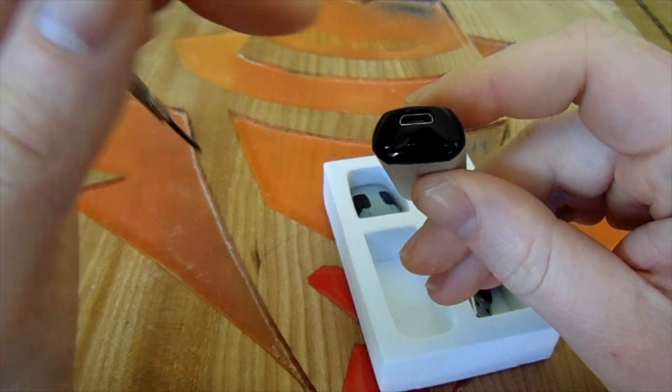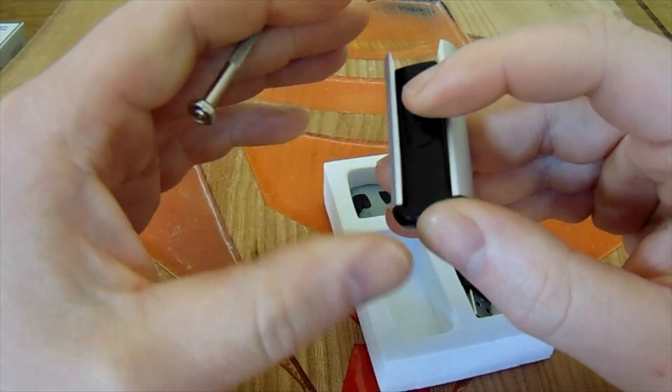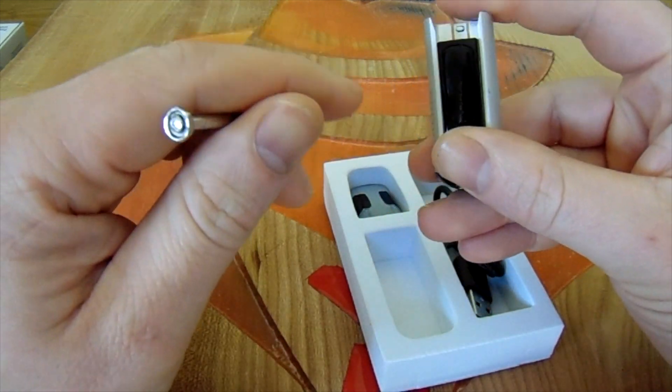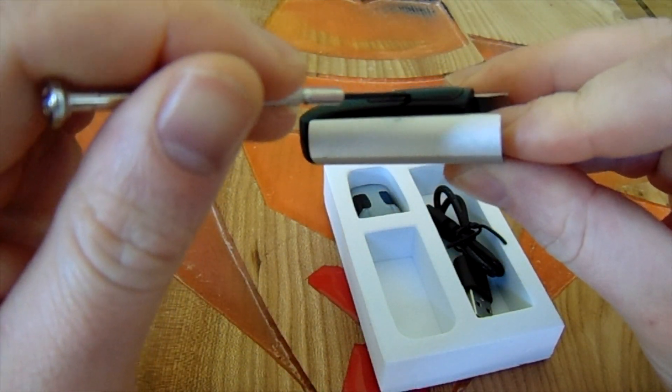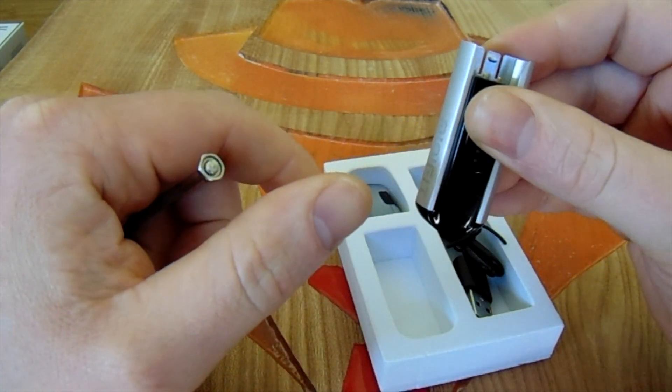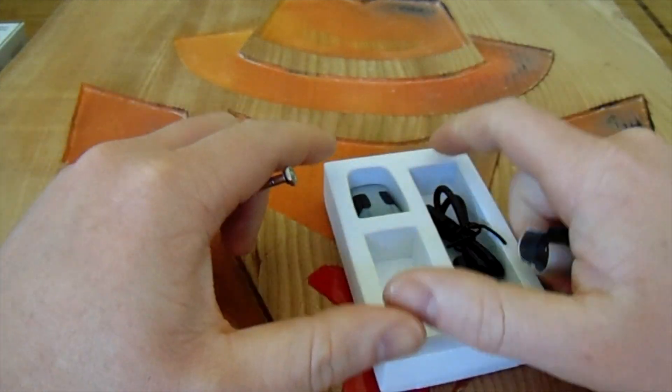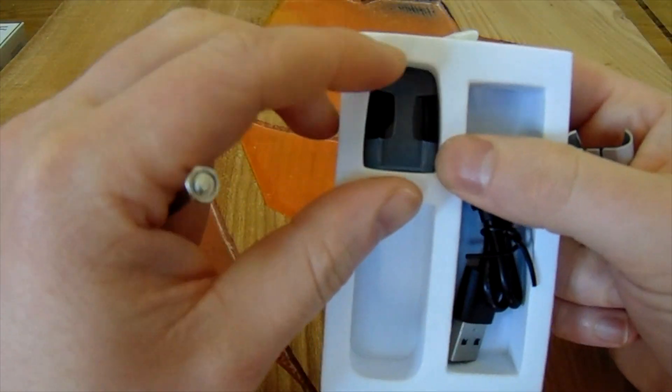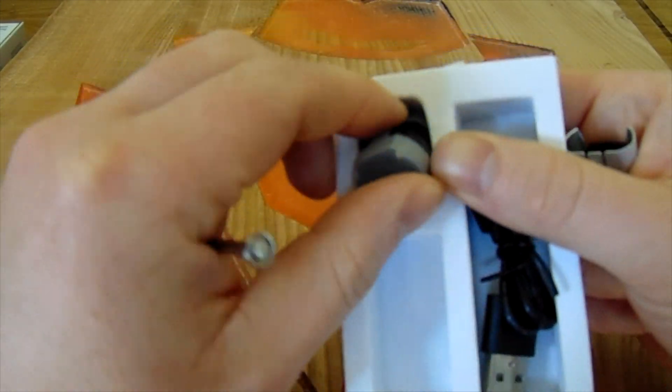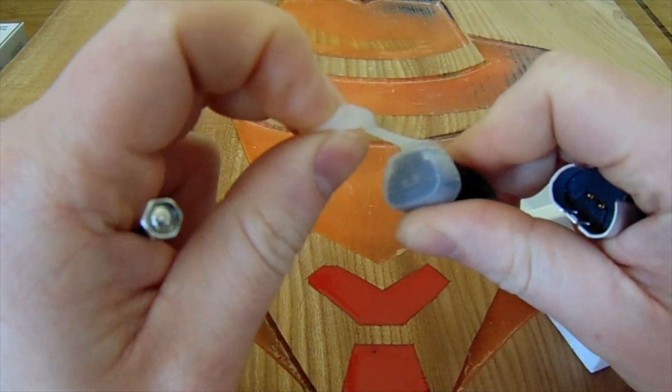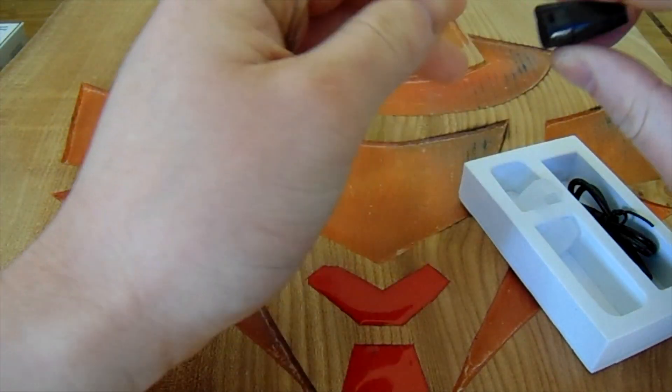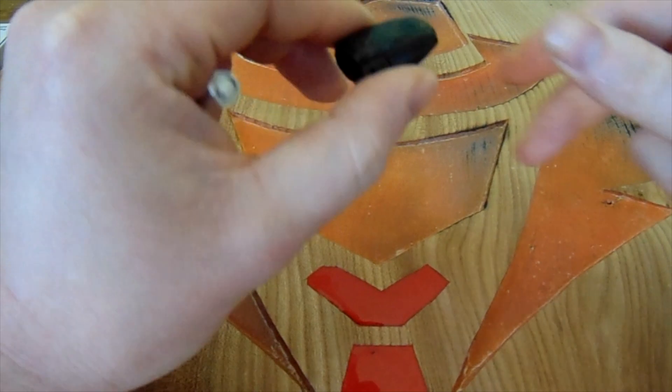The charging port is at the bottom there. This raised piece here is your fire button. And you've got your pod which comes in a little condom. Just peel that off.